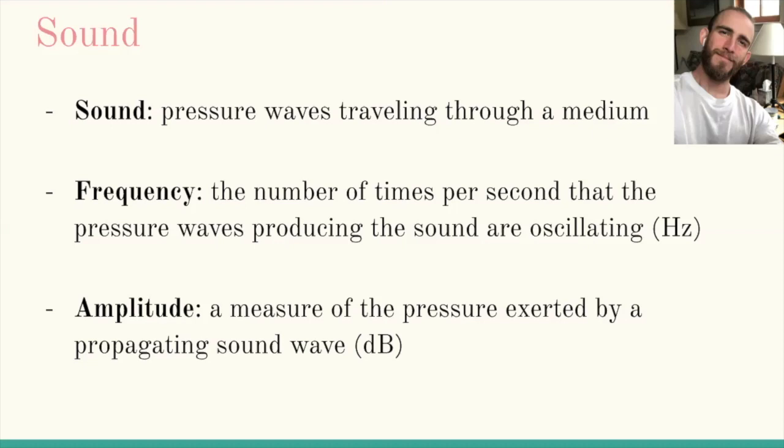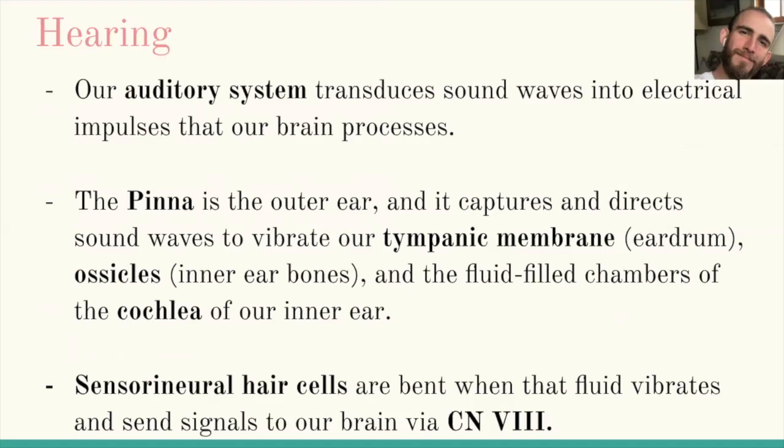The pressure waves that cause sound are transduced by our auditory system into electrical signals that our brain can process. The outer ear, or pinna, guides sound waves into our ear canal, where they travel to vibrate our tympanic membrane, or eardrum. From there, the bones of our inner ear, or ossicles, send the vibrations to the fluid within our cochlea, a shell-like structure in the inner ear. Within the cochlea, sensorineural hair cells bend with those vibrations and send impulses to our auditory centers via the vestibulocochlear nerve.